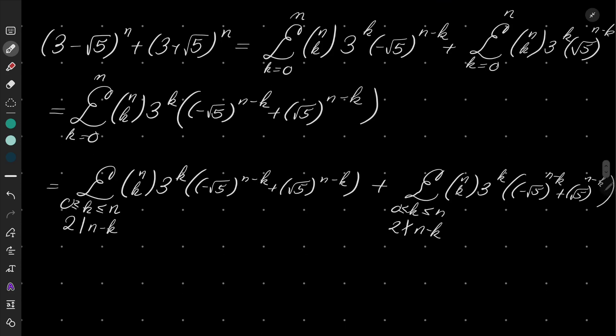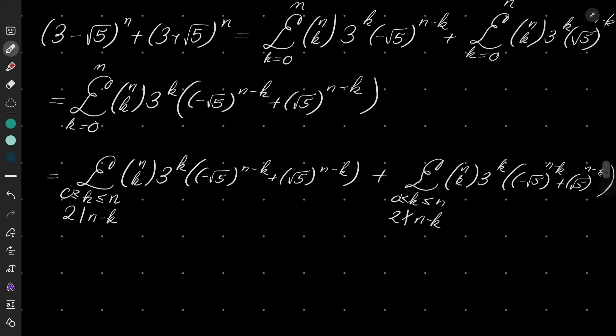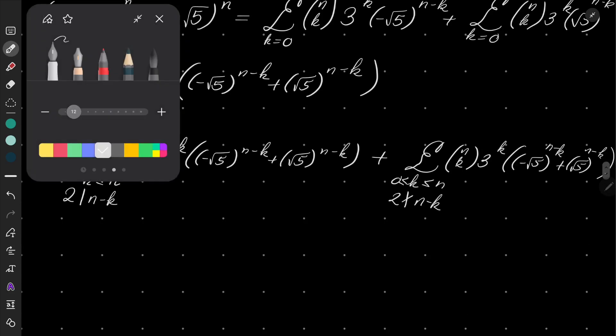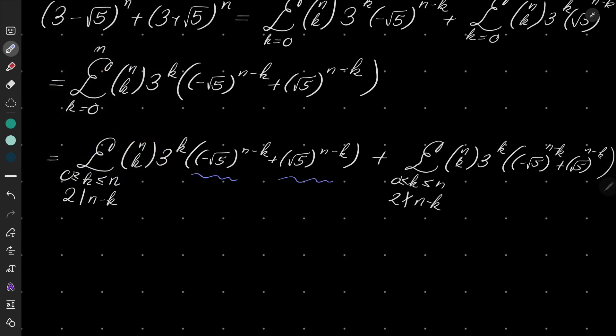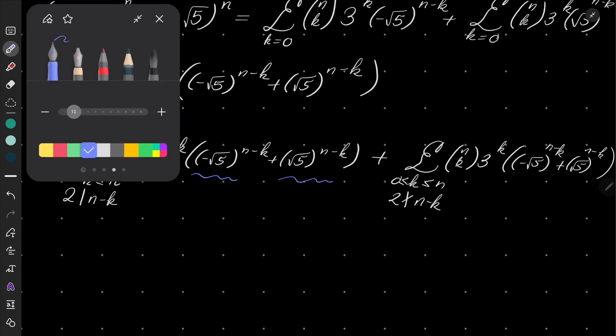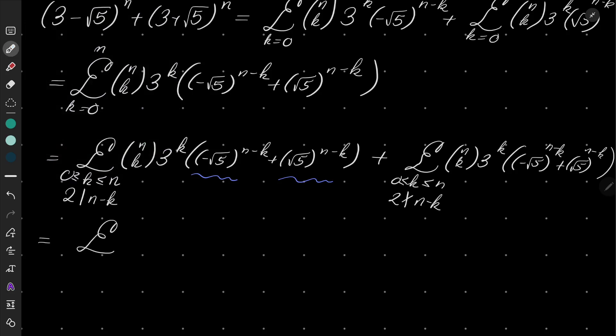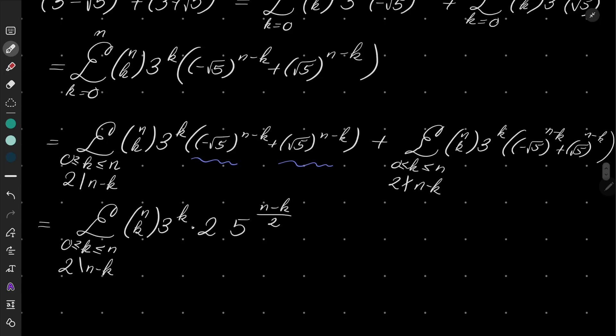Very well. What now? In this first case, when 2 divides (n-k), we see that this number is an integer. Why? Because square root of 5 squared is 5. So in other words, I can write the first sum more explicitly like that.